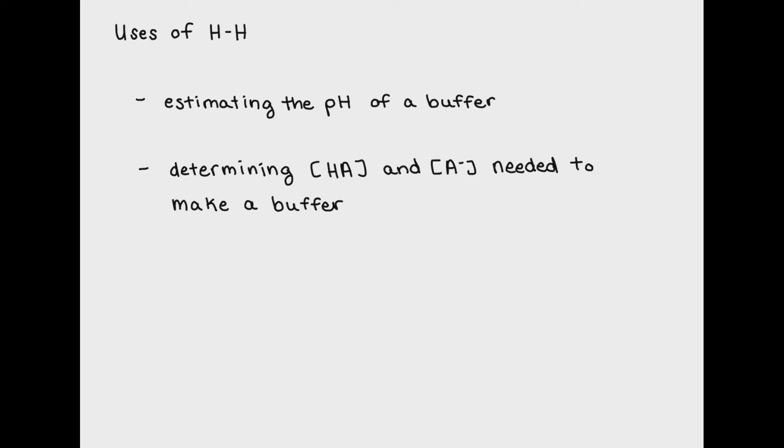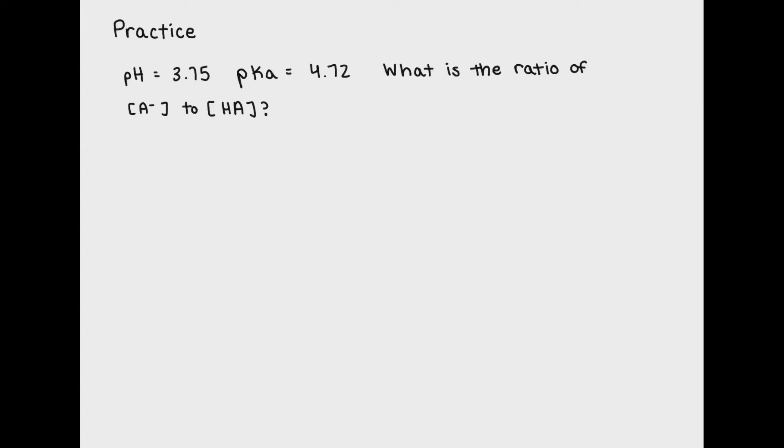Henderson-Hasselbalch can give you the specific ratio of HA to A minus needed, which you can then use to calculate the amount of conjugate acid-base pair needed to make your buffer.